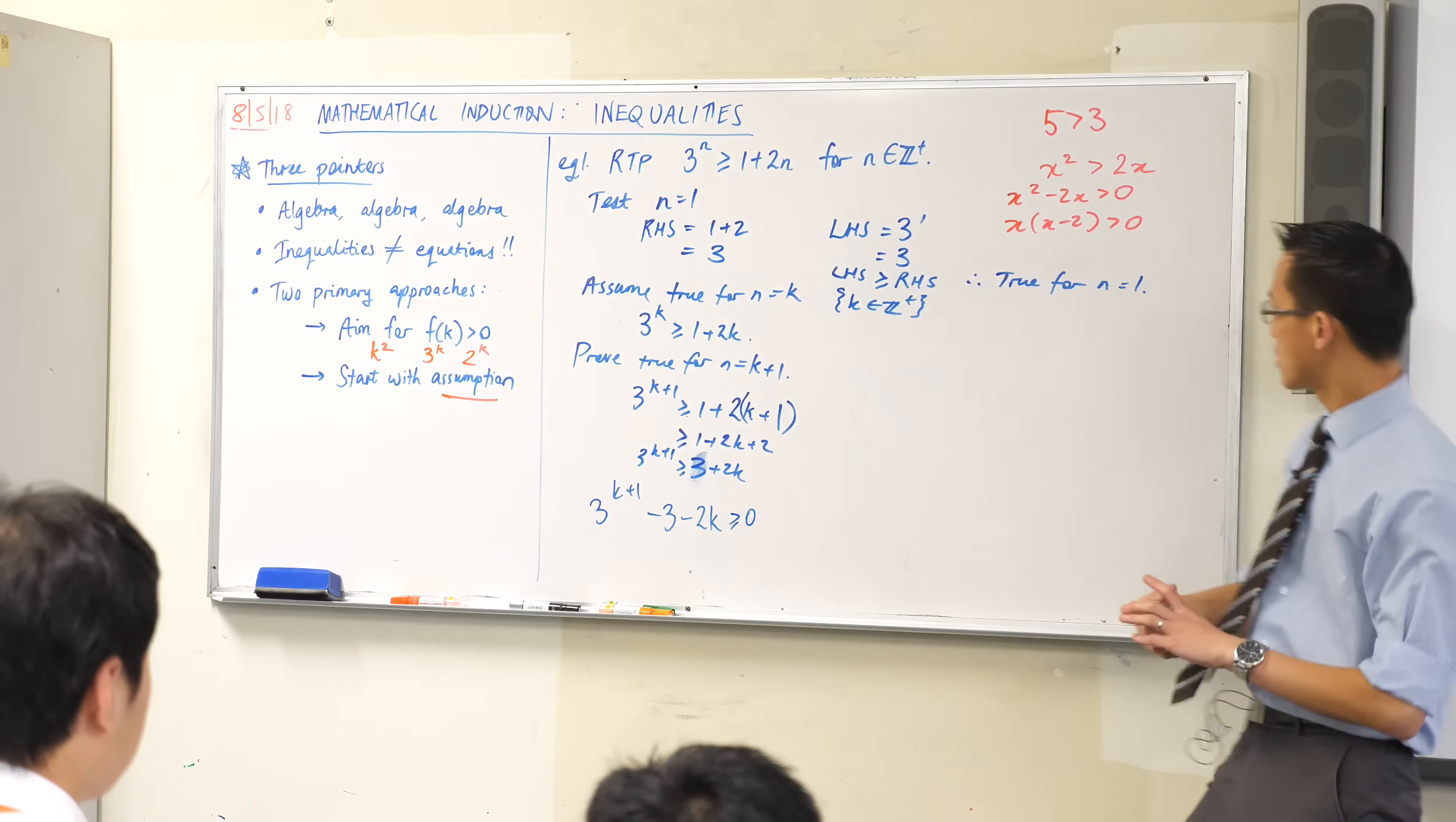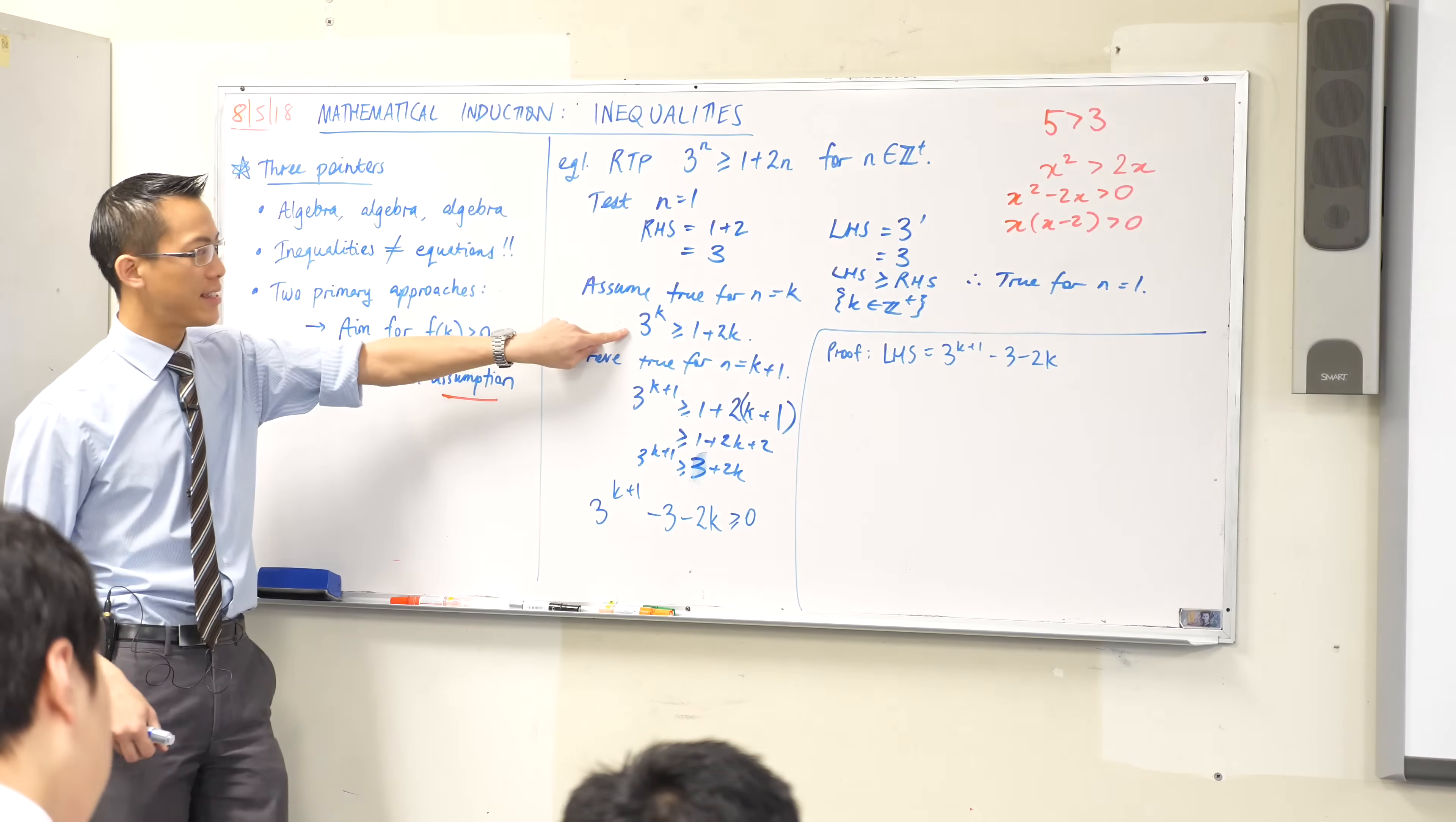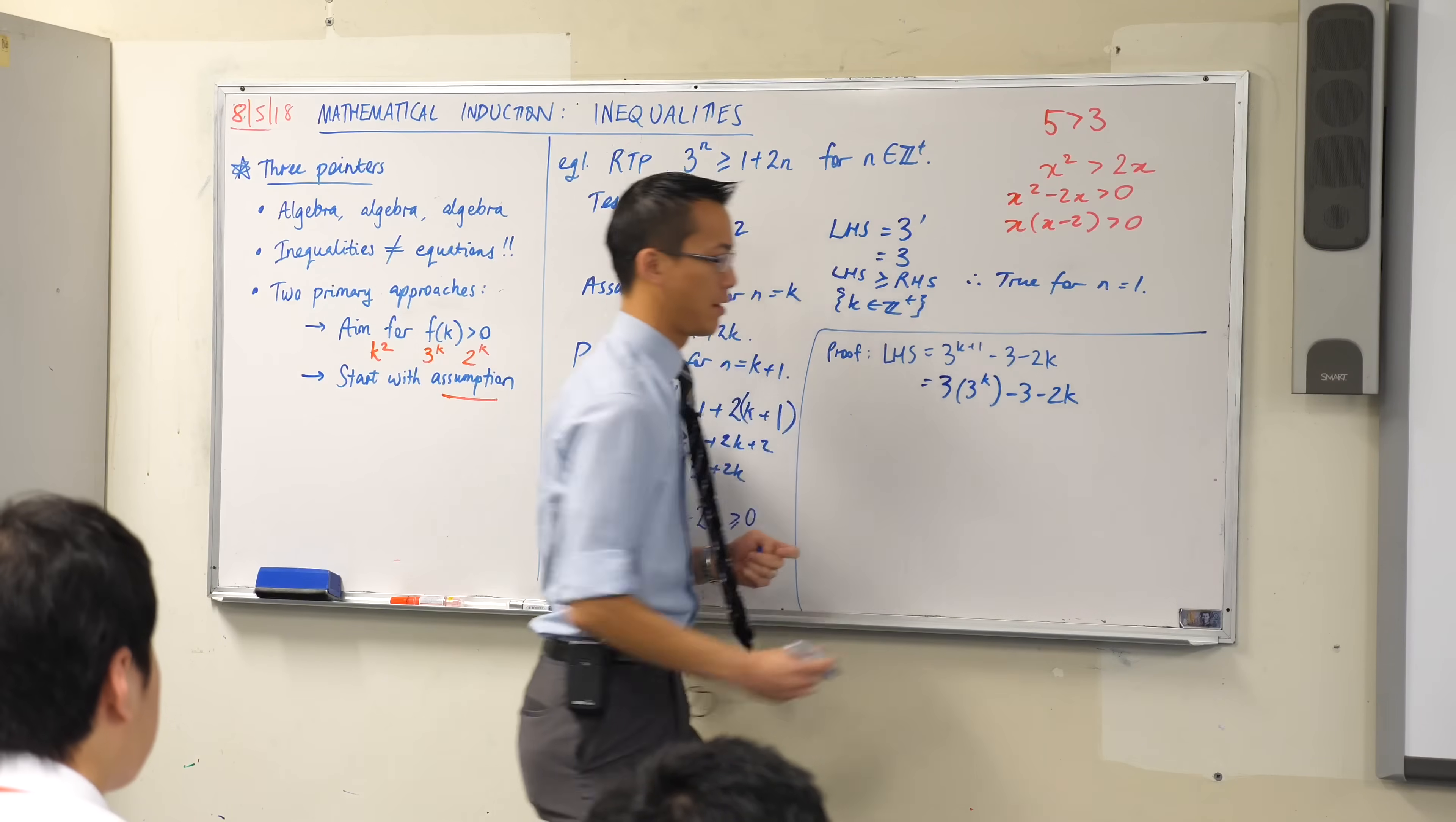In this example here, I'm going to have a go at using everything on the left-hand side. So I'm going to get all terms with k's in them over on the left-hand side. I want to prove that that is greater than or equal to zero. That's my goal. So what I'm going to do is, have I got enough space? Yeah, I reckon I'll make it. What I'm going to do now, here comes my proof, is I'm just going to think about this left-hand side and I'm going to work with it. So the left-hand side, I'm just going to write it character for character, 3 to the k plus 1 minus 3 minus 2k.